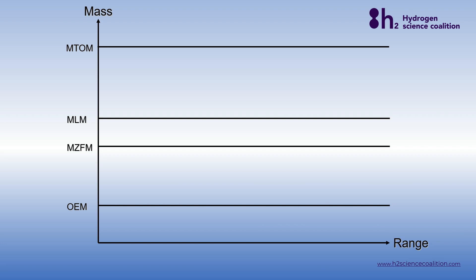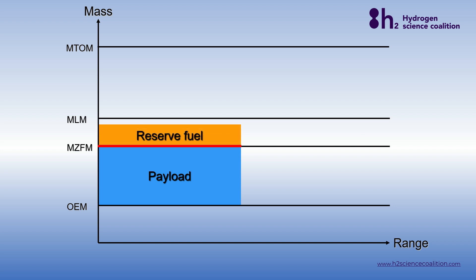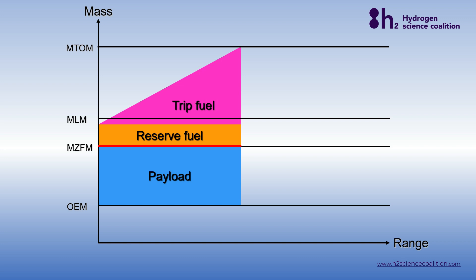So how do we load a conventional aircraft? This can best be illustrated with the so-called mass-range diagram. The maximum weights are on the vertical axis and the range you can fly is on the horizontal axis. The only mass you're not yet familiar with is the operator empty mass, OEM — this is just the empty mass of the aircraft without any payload and fuel. First, we add the payload, which can be passengers with baggage and/or cargo. How much payload we can take is limited by the maximum zero fuel weight, because passengers and cargo go into the fuselage. Thereafter, we load the reserve fuel, which is the fuel to divert to your alternate airport plus 30 minutes final reserve. Finally, we load the trip fuel, which is the fuel required to fly from departure to destination.